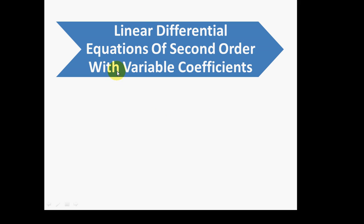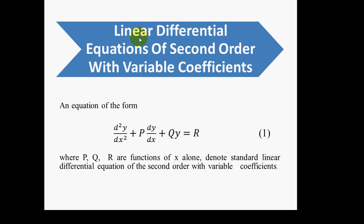In this video lecture, we are to discuss what is the method to find the complete solution of linear differential equation of second order with variable coefficients. There are so many methods. First of all, we have to know what is the exact form of this type of differential equation. The form is d²y/dx² + P(dy/dx) + Qy = R, where P, Q, R are functions of x only — this denotes the standard linear differential equation of second order with variable coefficients.